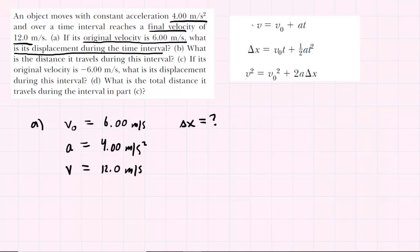We've pasted the three main equations of kinematics over here on the right-hand side. We want to make sure that we pick an equation that involves the four variables that we've listed here. Notice that time is not part of them. So the equation that makes the most sense to use — the one without time — would be this one. We can copy that equation down and then we'll simply fill in the known values.